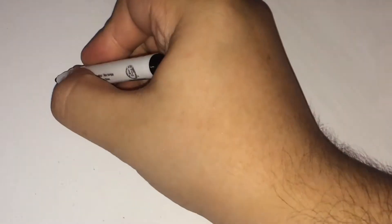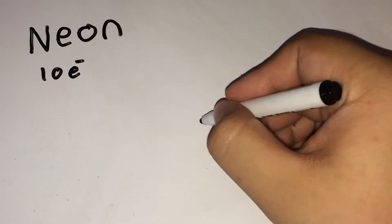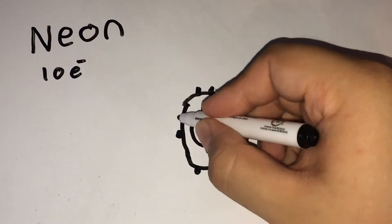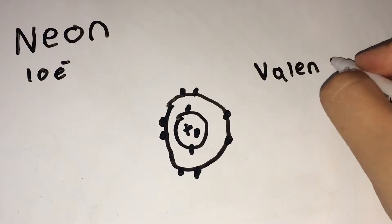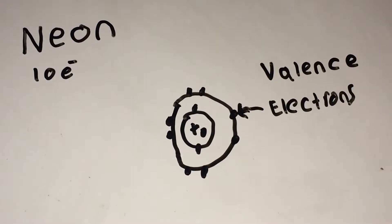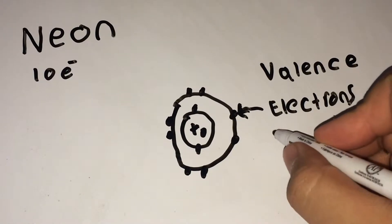For example, neon has ten electrons. The first two go in the first energy level and then eight in the second level. Eight plus two is obviously ten, which means that we have already used ten electrons. Neon has eight electrons in its second energy level, which also happens to be its outermost level.